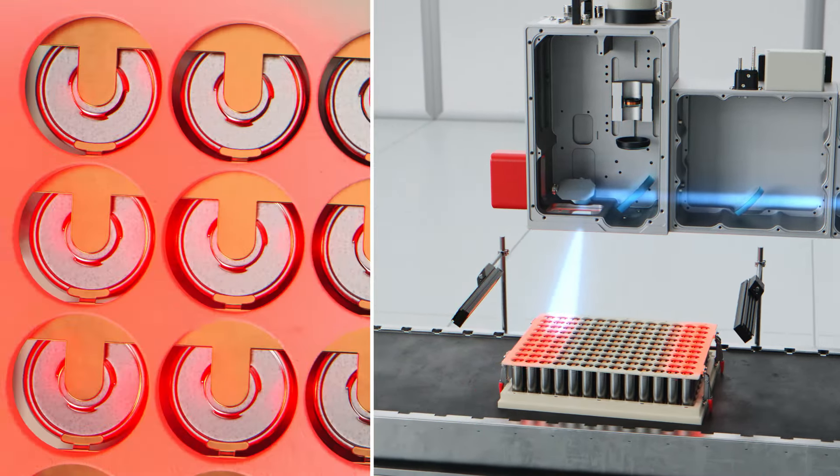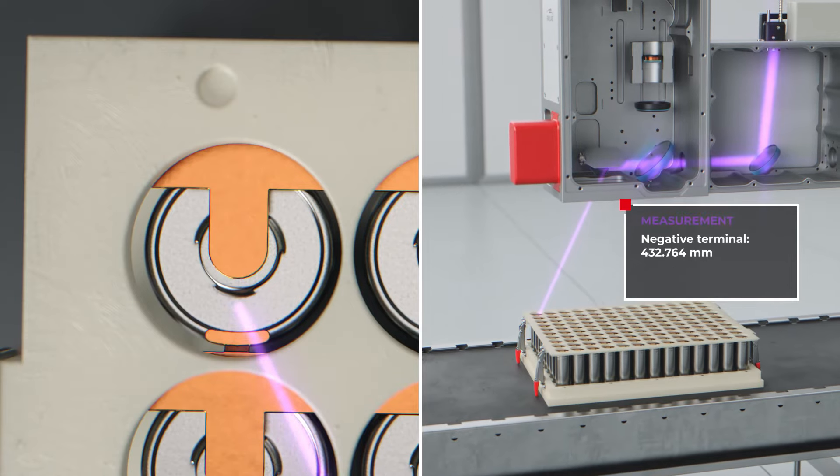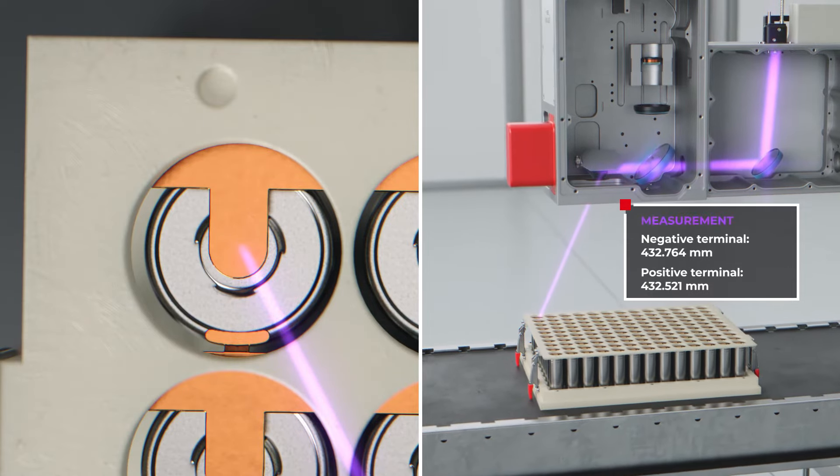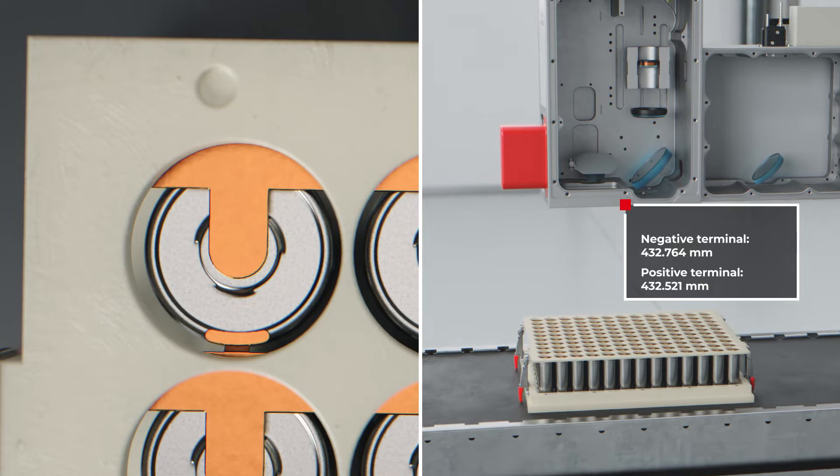The distance sensor measures the distance to the negative and positive terminals of the battery cells. This process takes only a few milliseconds.